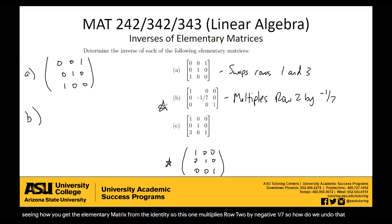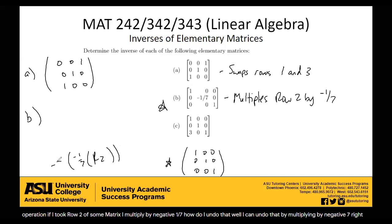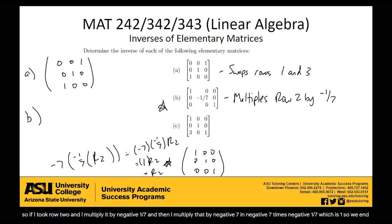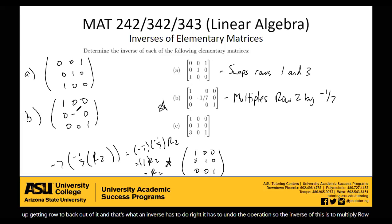So this one multiplies row two by negative one-seventh. How do we undo that operation? If I took row two of some matrix and multiplied by negative one-seventh, I can undo that by multiplying by negative seven. So if I took row two, multiplied by negative one-seventh, and then multiplied by negative seven, we'd end up with negative seven times negative one-seventh, which is one — we get row two back. So the inverse of this is to multiply row two by negative seven, meaning the elementary matrix looks exactly the same except instead of negative one-seventh in the middle, it's negative seven.